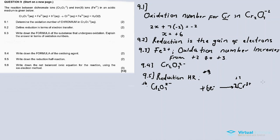Now we also need to balance the oxygen atoms. There are 7 oxygen atoms on the left and zero on the right. To balance the oxygen, we add 7 H₂O molecules to the right hand side, giving 7 oxygen atoms on the right.